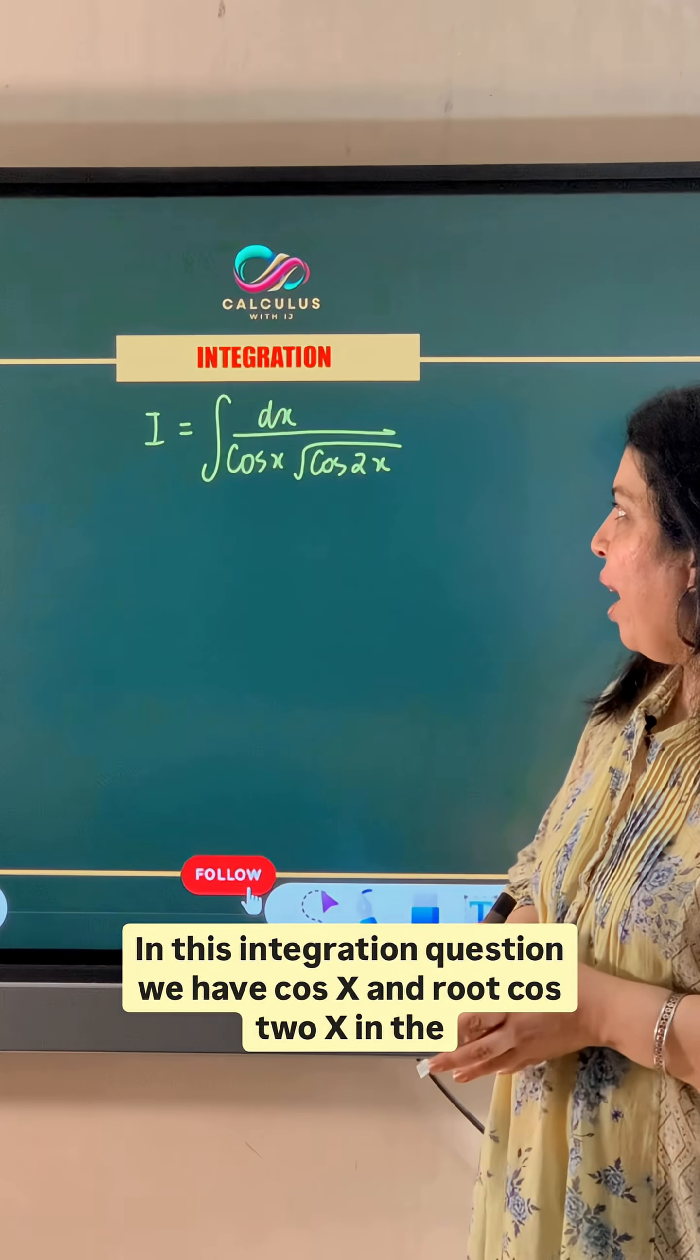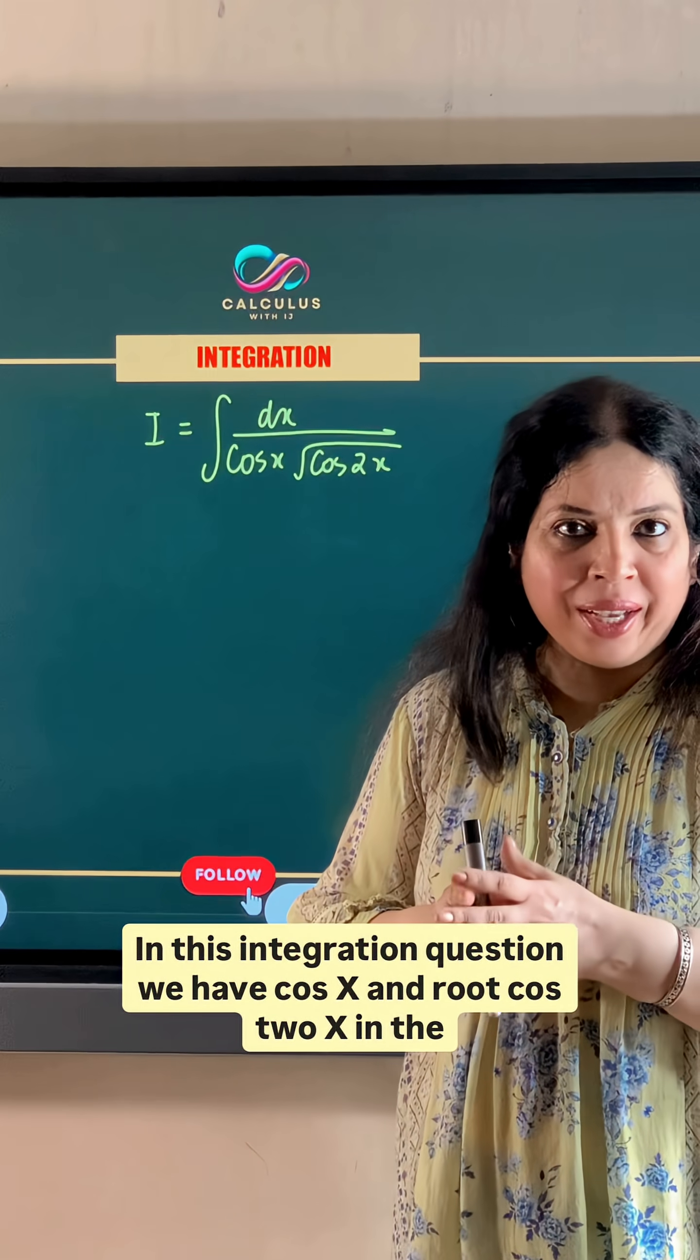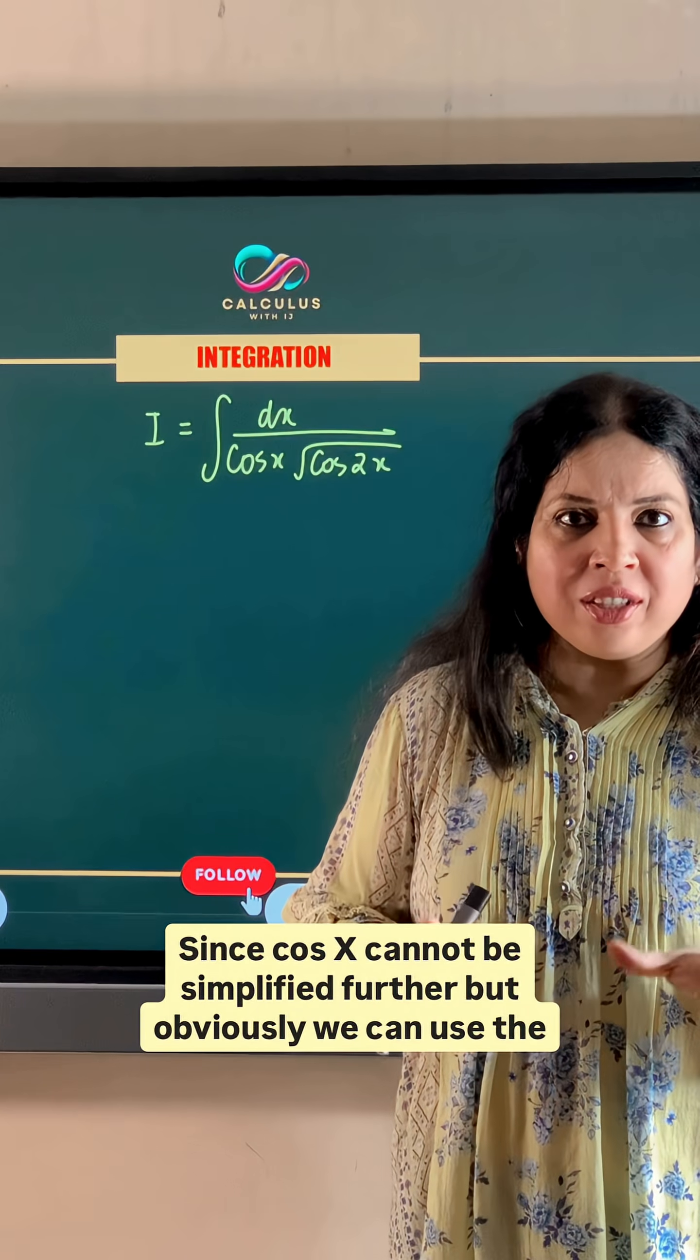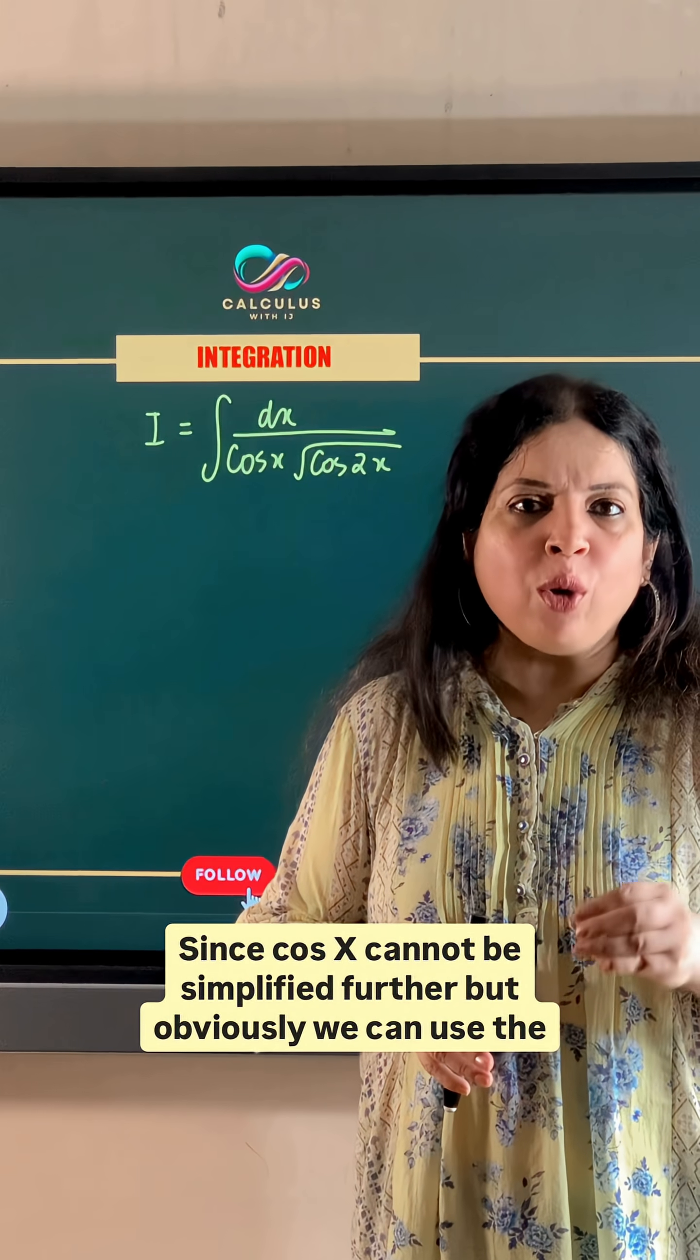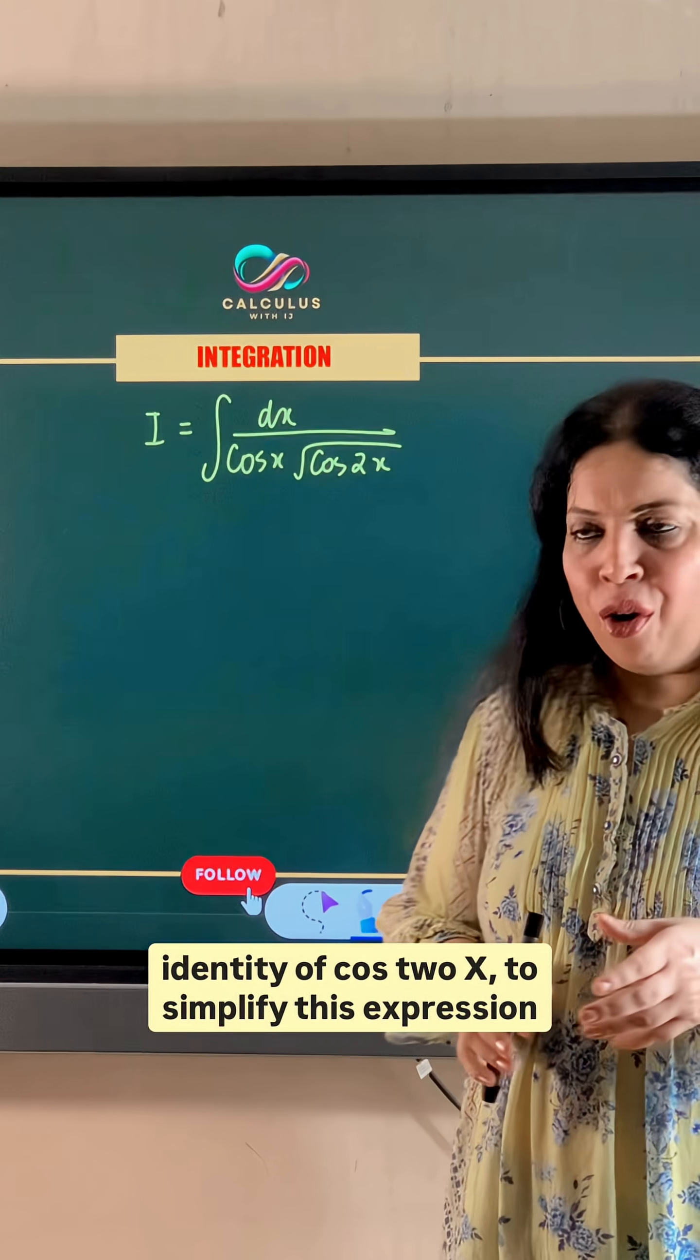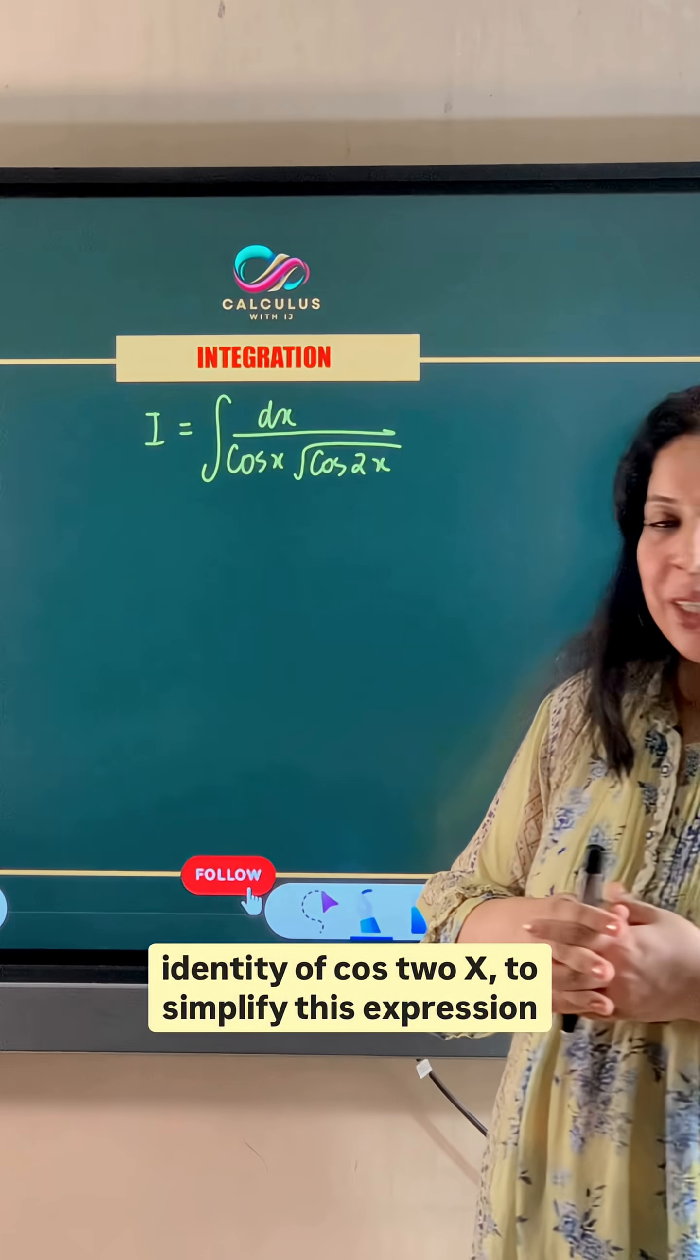In this integration question, we have cos x and root cos 2x in the denominator. Since cos x cannot be simplified further, but obviously we can use the identity of cos 2x to simplify this expression.